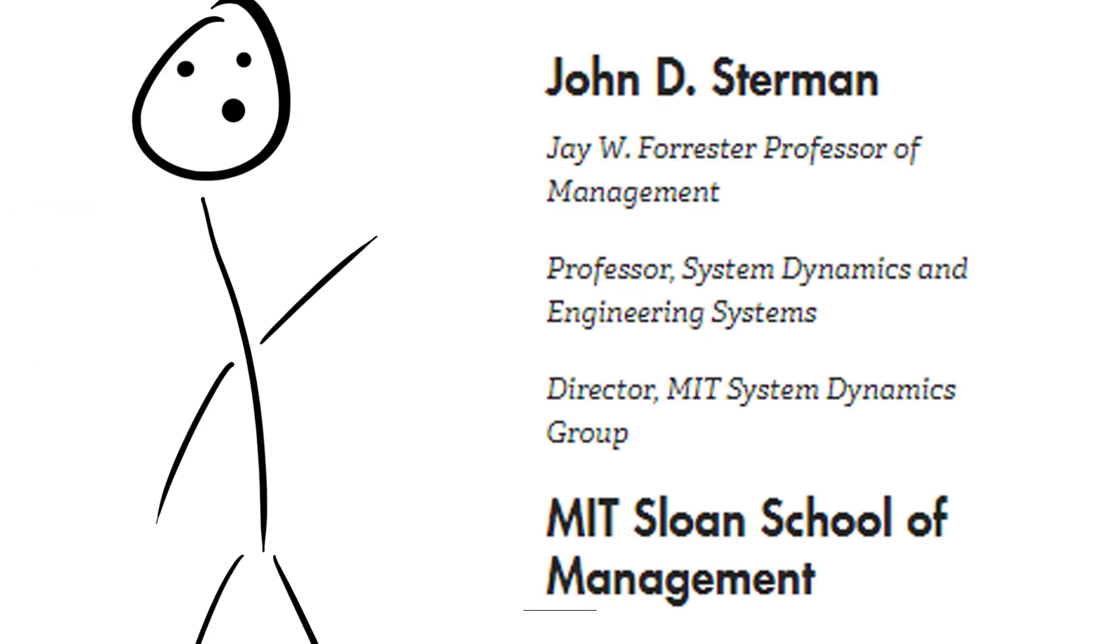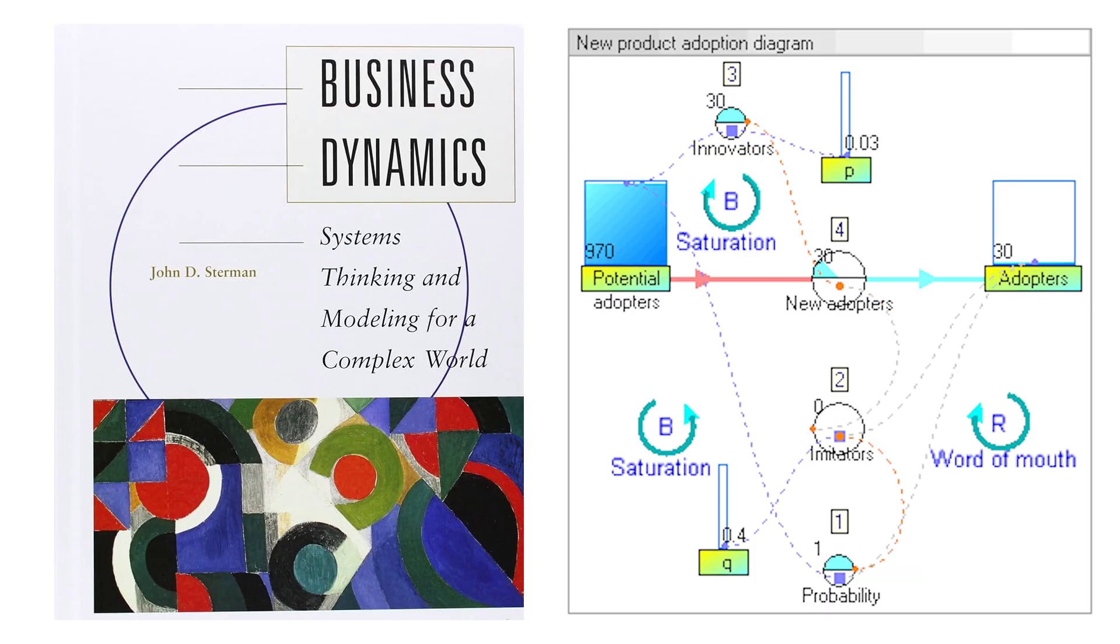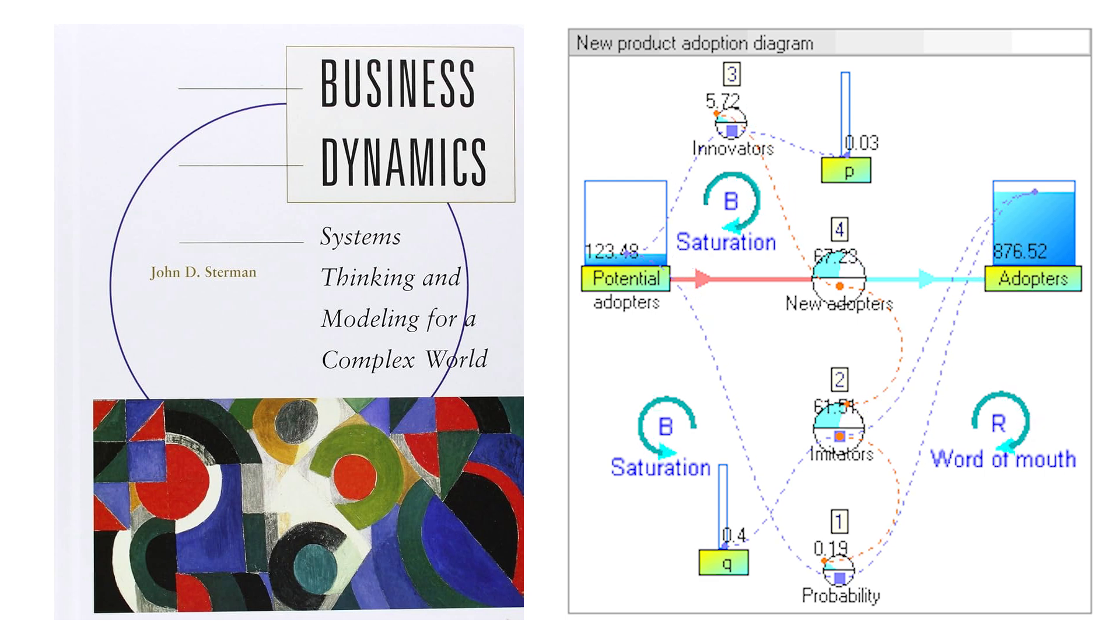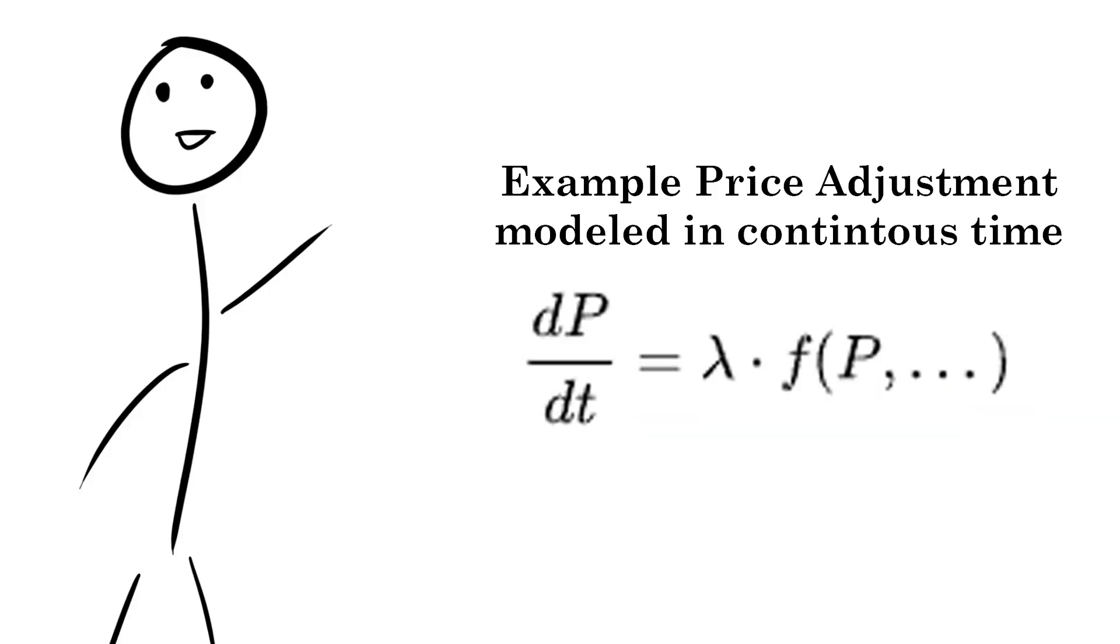John Sterman, the current director of MIT's System Dynamics Group, has applied systems thinking to business management and other widely applicable systems. System Dynamics isn't all theoretical, though.